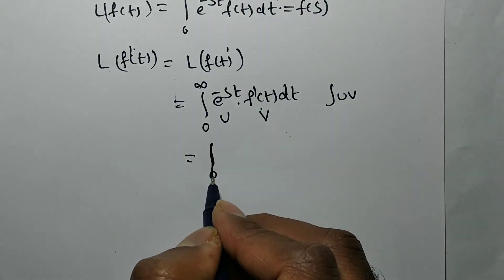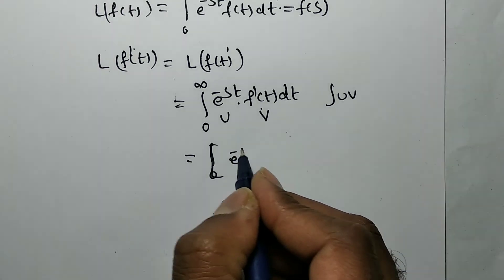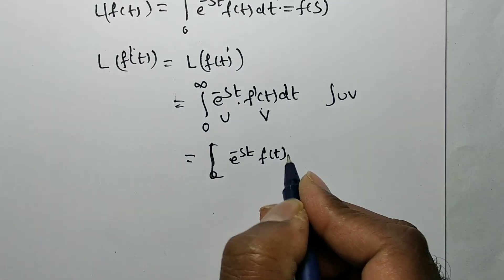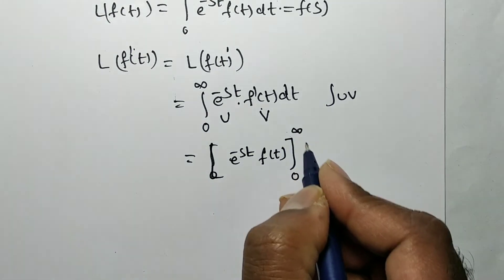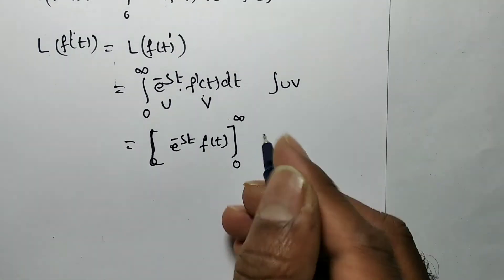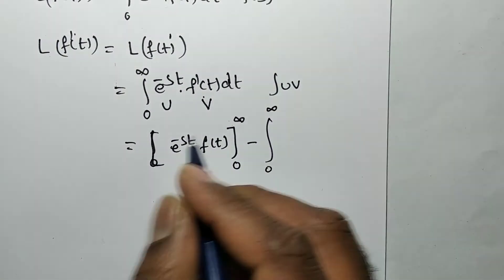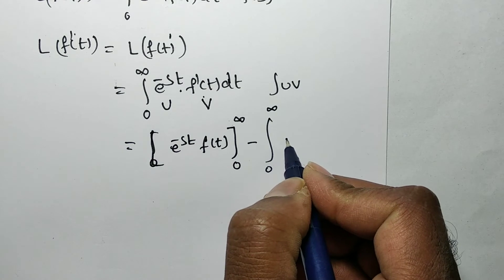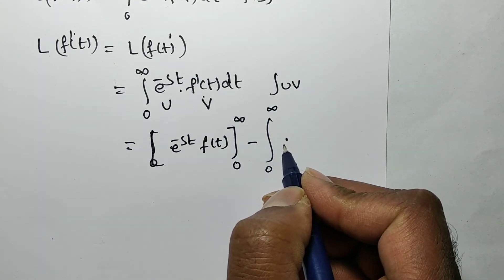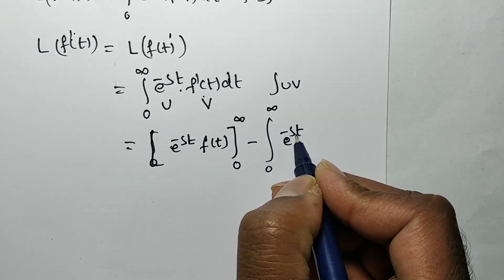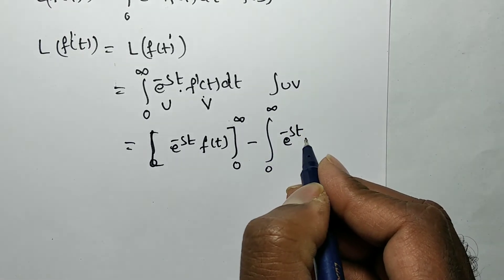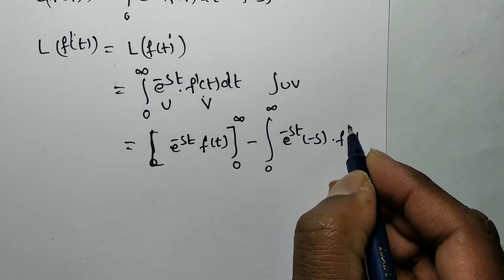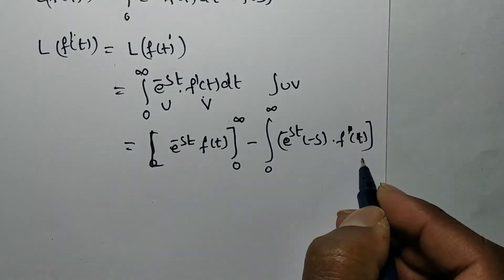Applying the uv formula: u·v₁ minus integral of u'·v₁ dt, where v₁ is the integral of f'(t), which is f(t). So we get: e^(-st)·f(t) evaluated from 0 to infinity, minus the integral term.